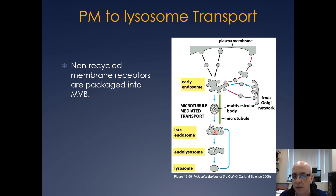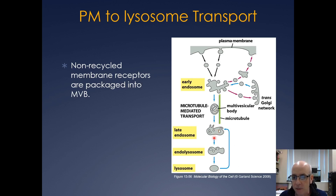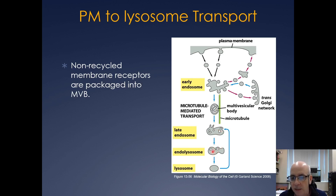Then they'll go on to become the late endosome, at which point the lysosome can fuse with it. The vacuolar ATPase will start pumping protons in, and that will get all the acid hydrolases and the acid lipases and things like that to remove all the proteins and lipids associated with these vesicles. And then you're just left with a lysosome.